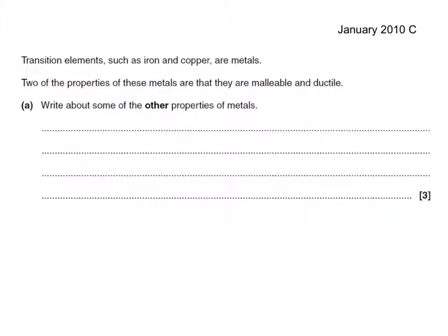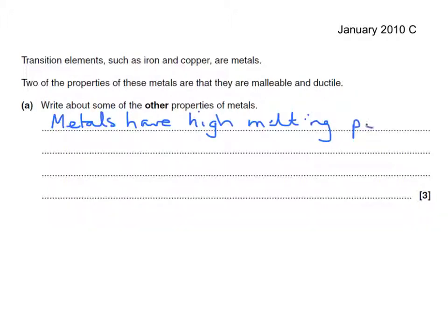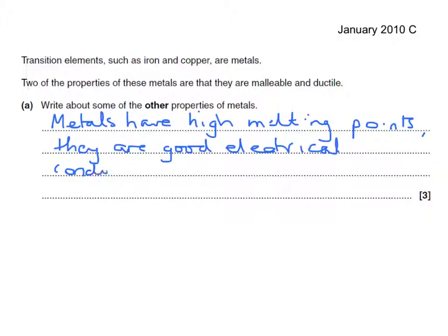Here's a past paper question. Transition elements such as iron and copper are metals. Two of the properties of these metals are that they're malleable — meaning it can be hammered into shape — and ductile — meaning it can be drawn out into a wire. Write about some of the other properties of metals. There are three marks for this question so we'd be expected to mention three properties. Metals have high melting points, they are good electrical conductors, and are hard.